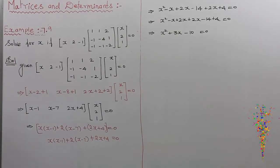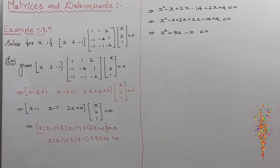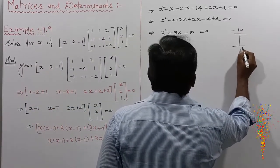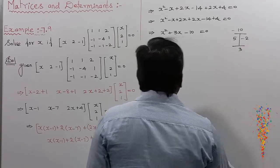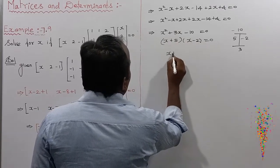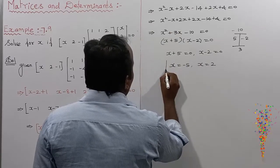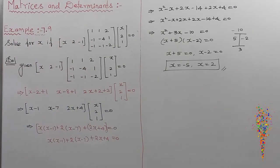Factorizing x² + 3x - 10 = 0: we need two numbers whose product is -10 and sum is 3, which gives +5 and -2. So (x + 5)(x - 2) = 0. Therefore x + 5 = 0 gives x = -5, and x - 2 = 0 gives x = +2.